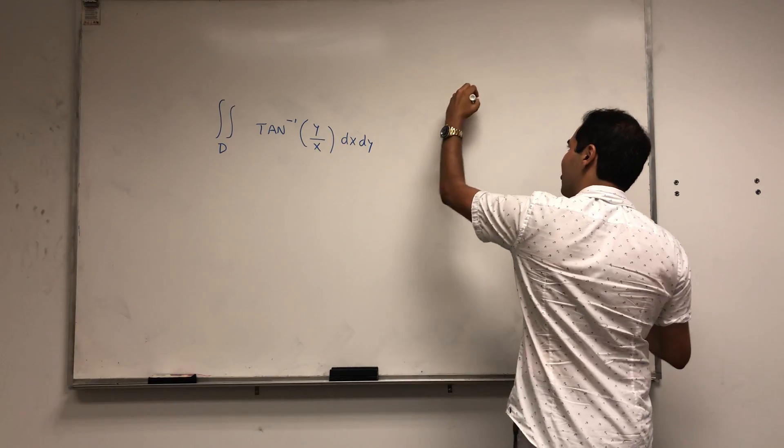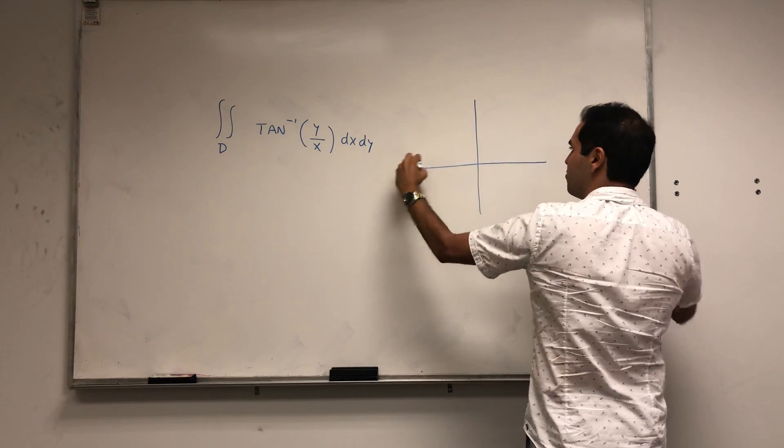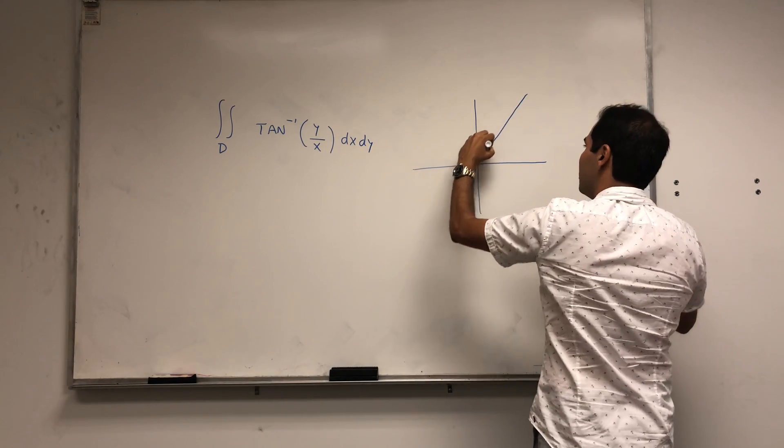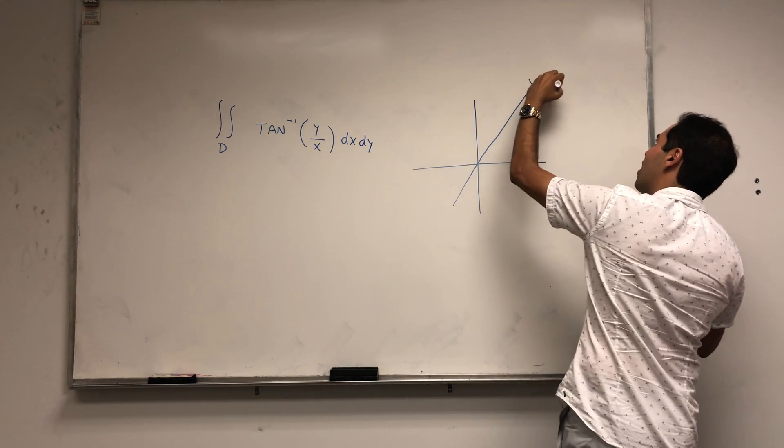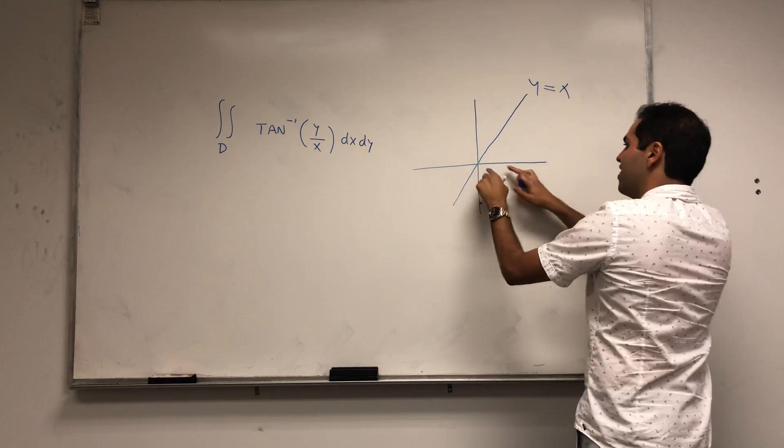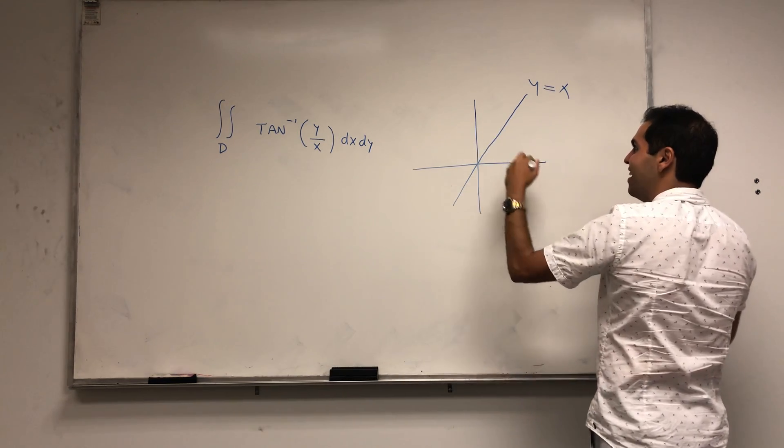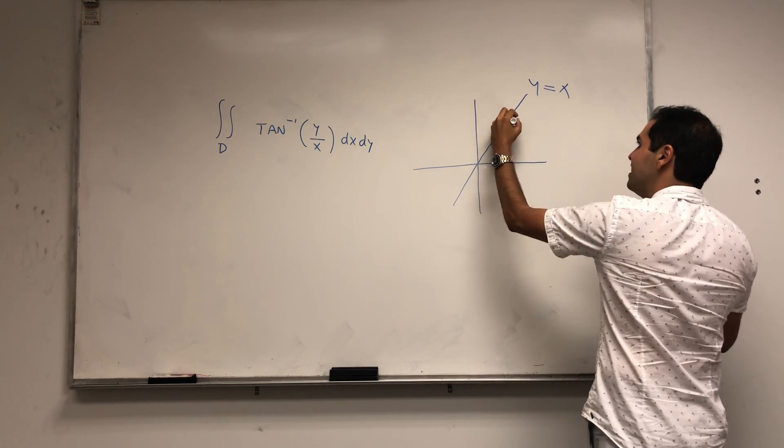Let me just draw it out, I think it's easier. So if this is the line y equals x, and this is the positive axis, then D is just the wedge.